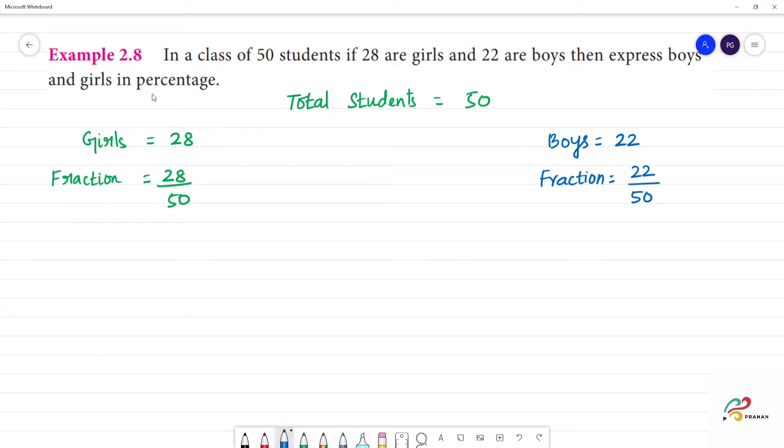What do we do? Percentage. So what we do is multiply by 100. So 28 by 50, multiply by 100. Then, 250's are 100. Then 8-2's are 16, 2-2's are 4, 1-5. 56 percentage. What is girls?